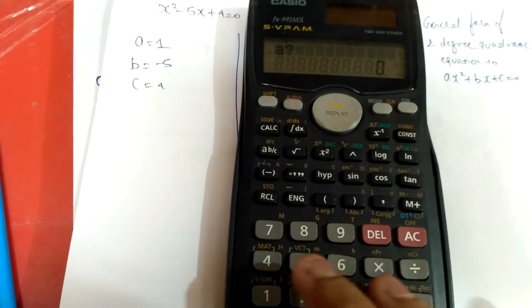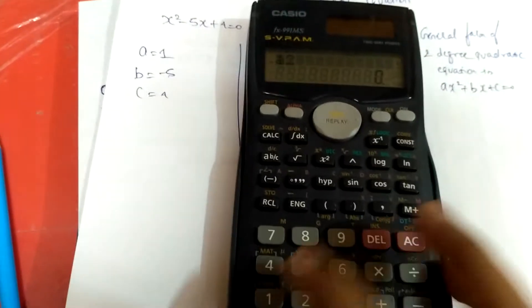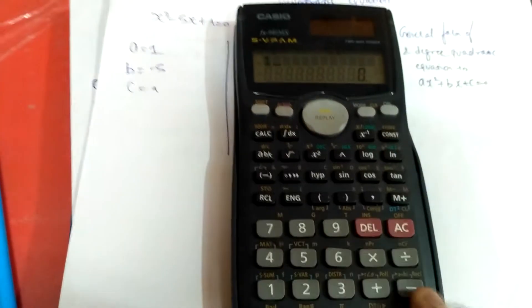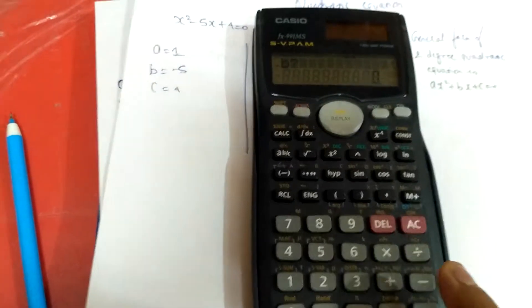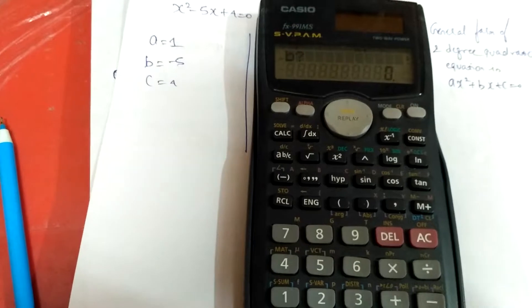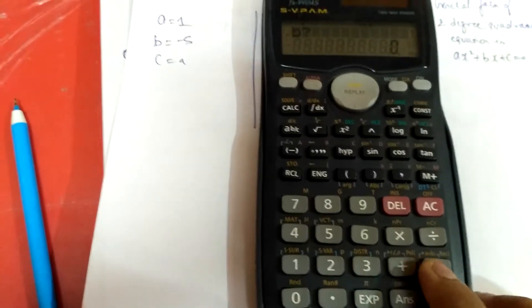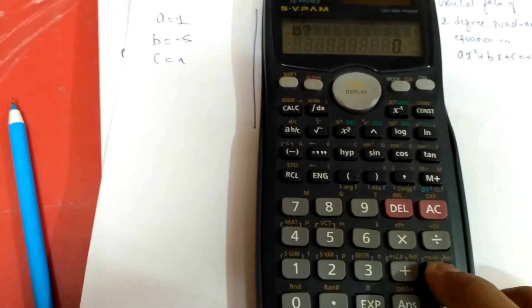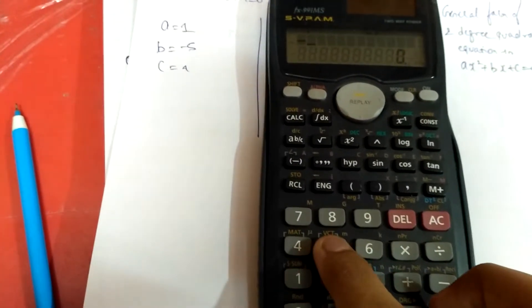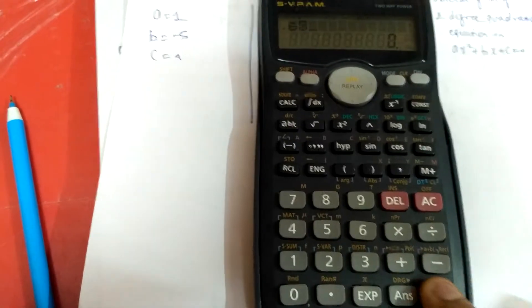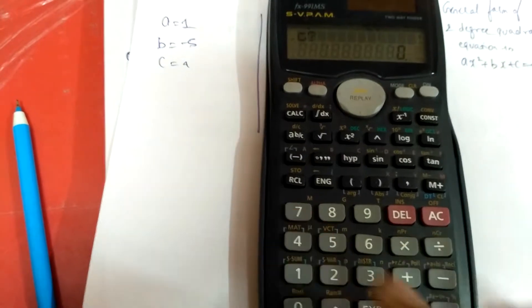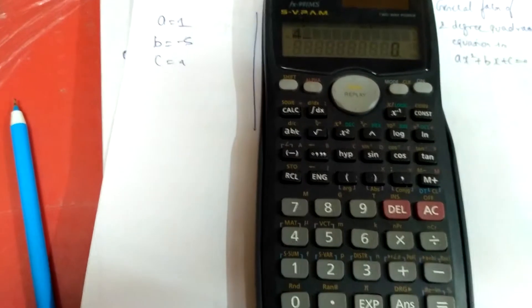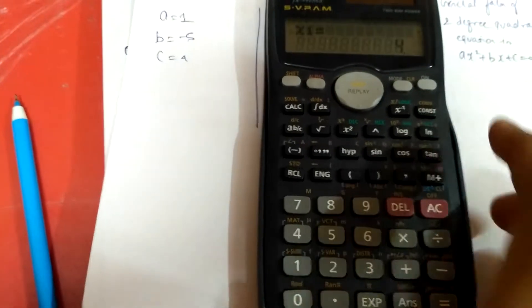Right now it is asking the value of a, which is 1. So press 1 then press equal, then enter b. If you have to insert a negative value, you have to first press this negative sign then the value 5 and press equal, then c which is 4, and then equal.